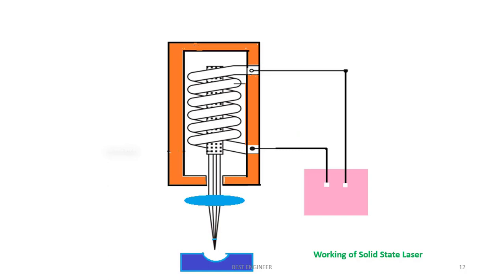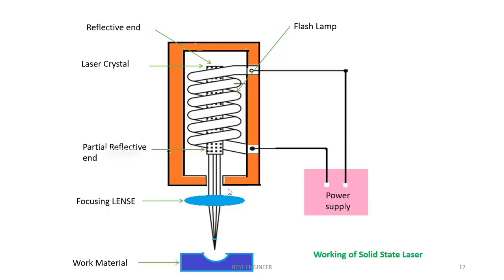The working principle of laser beam machining. These are the important parts. Flash tube. Laser crystal. Reflective end. Partial reflective end. Focusing power supply. Here, the laser is stimulated and this laser is passed through this lens. And this lens focuses the lasers at a very narrow point. Here, the operation takes place and the material is removed.